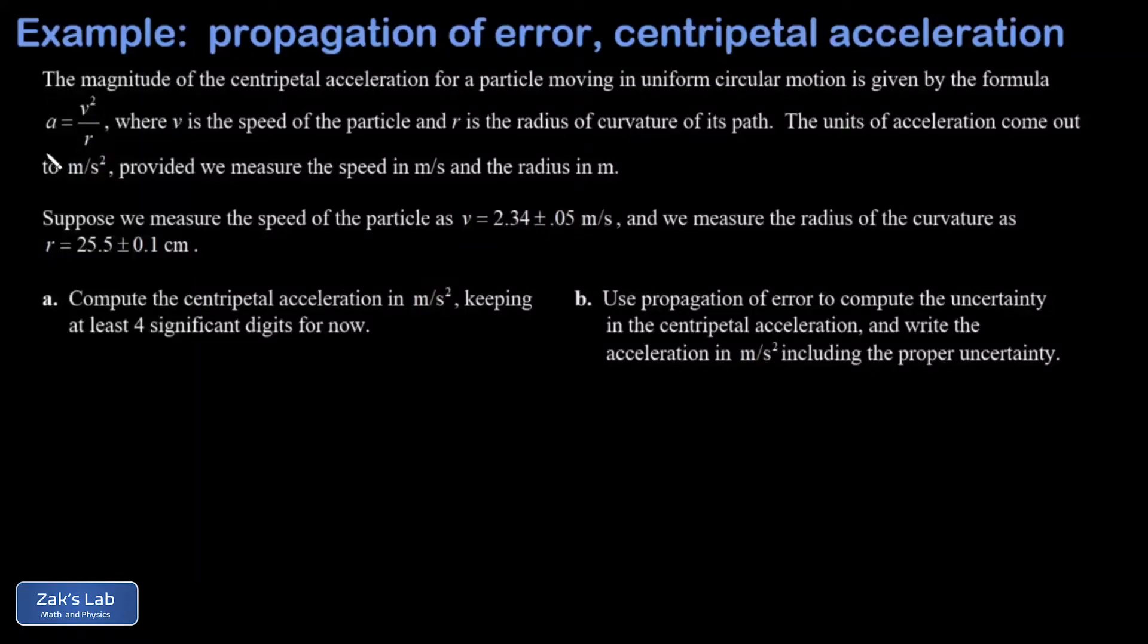In this video we're given the formula for centripetal acceleration, v squared over r, where v is the speed of an object moving in a circular path and r is the radius of curvature.